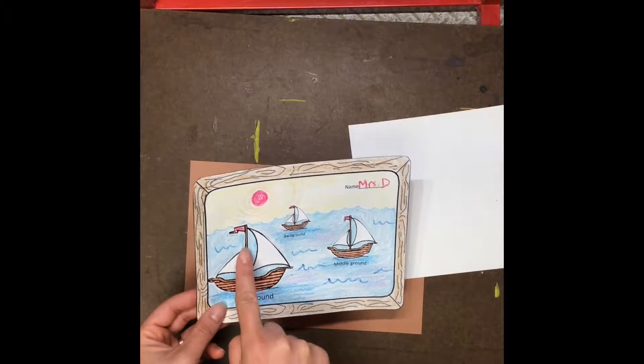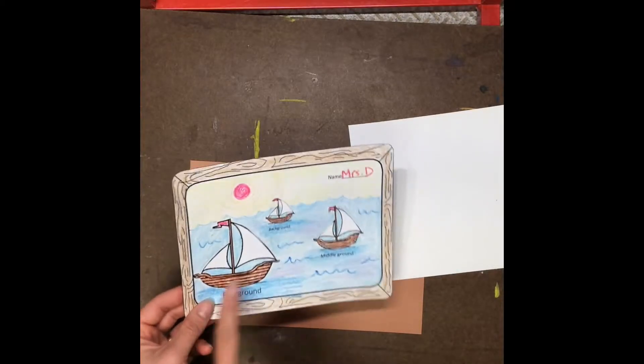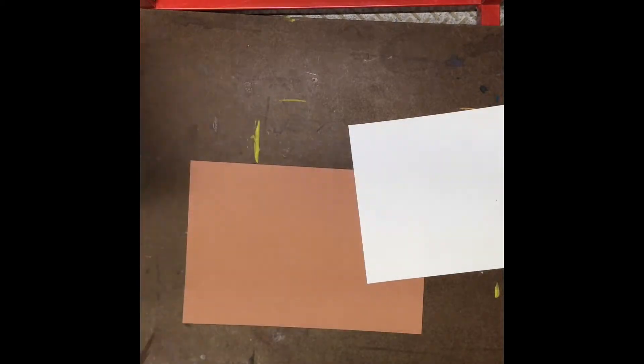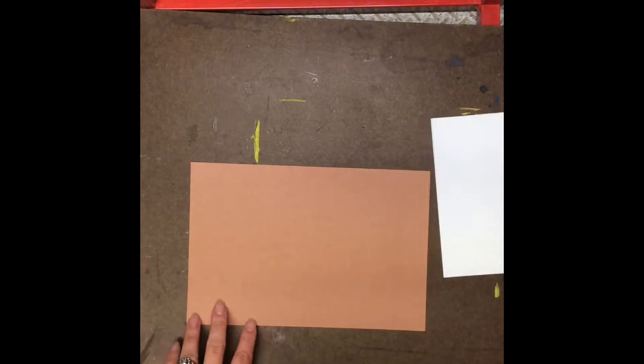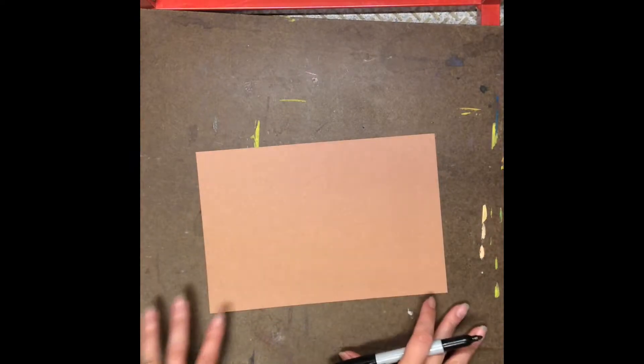There's also a really skinny rectangle that sticks up that holds the sail to the boat. So I'm getting some brown paper and some white paper today and I'm going to draw a large, medium, and small boat all on this paper. I'm going to start with the brown paper first.